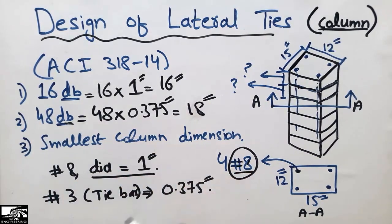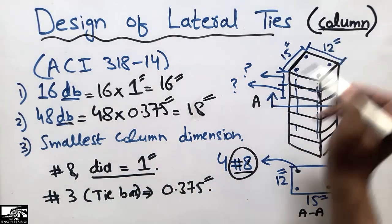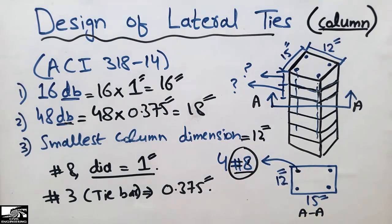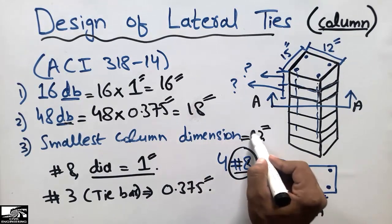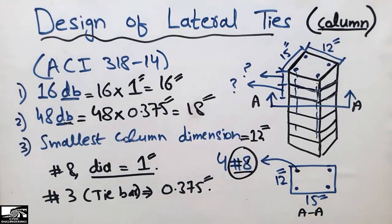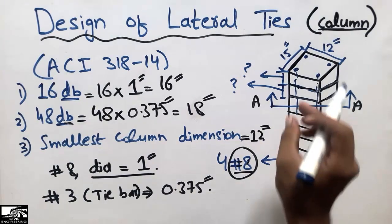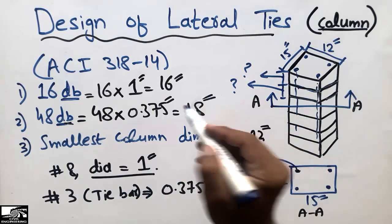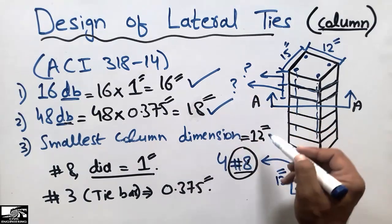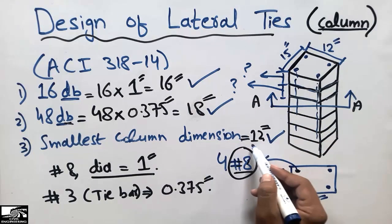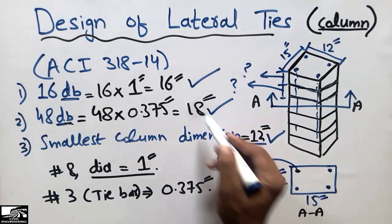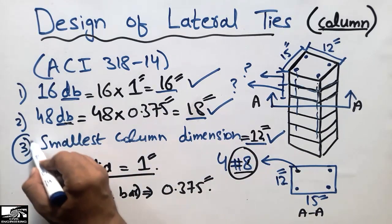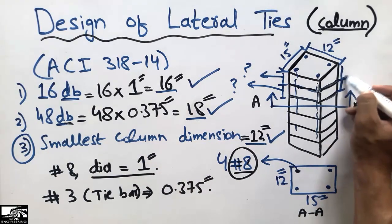For Formula 3, the smallest column dimension is 12 inches, so we write 12 inches directly. Now comparing the three values — 16 inches, 18 inches, and 12 inches — we take the minimum. Since 12 inches is the smallest, the spacing between the lateral ties is 12 inches.